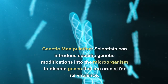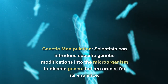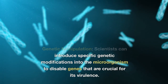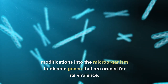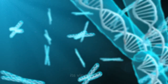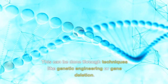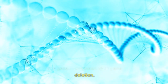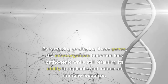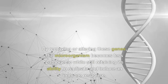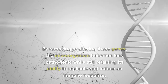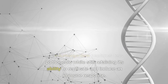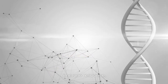Genetic manipulation: scientists can introduce specific genetic modifications into the microorganism to disable genes that are crucial for its virulence. This can be done through techniques like genetic engineering or gene deletion. By removing or altering these genes, the microorganism becomes less pathogenic while still retaining its ability to replicate and induce an immune response.